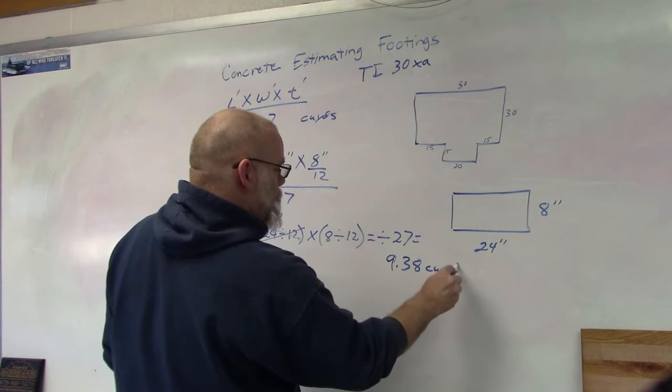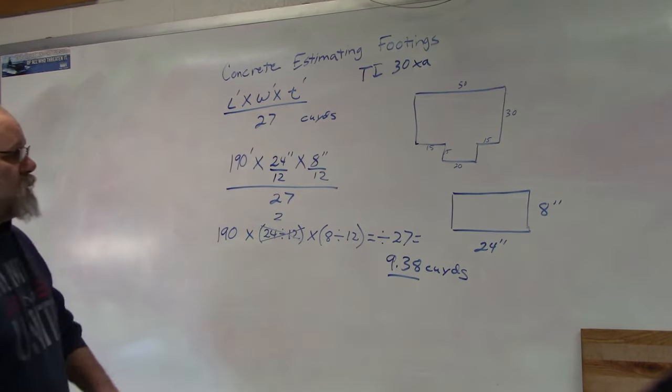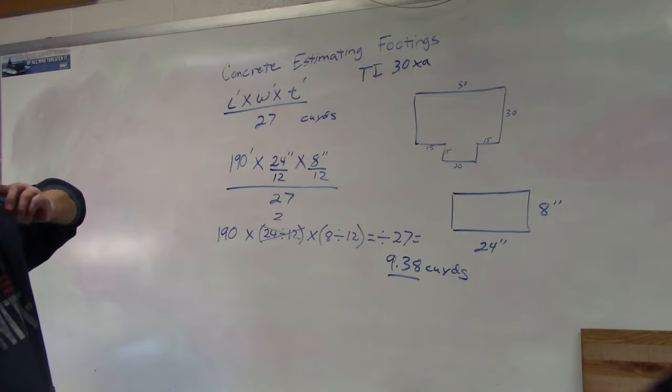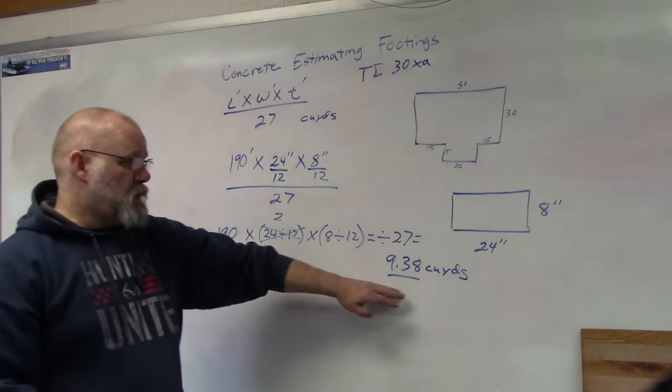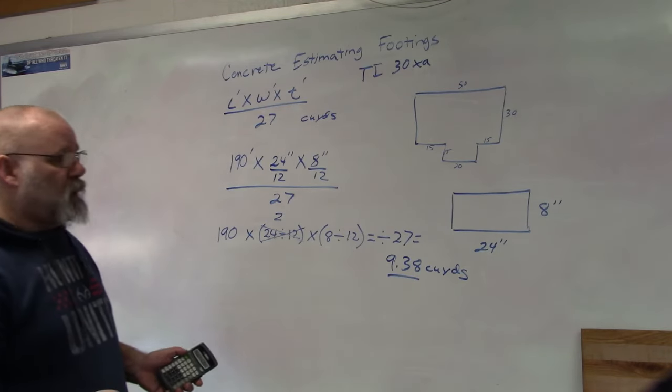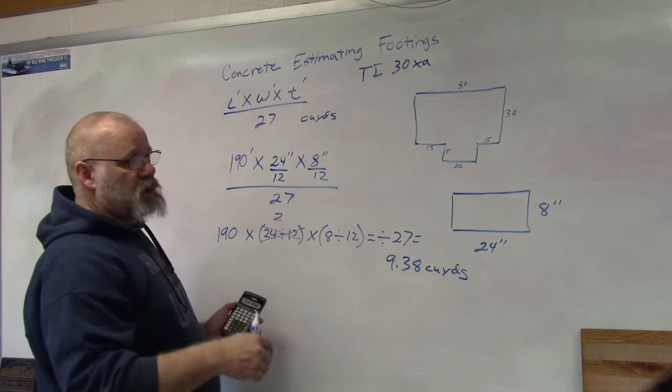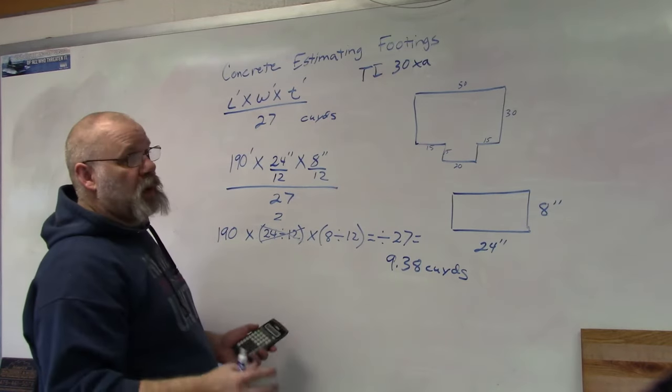9.38 cubic yards. So the footings to go around that entire house would be 9.38 cubic yards. Now remember, with concrete, you always want to add some waste. The larger this number, the more waste you usually want to add.